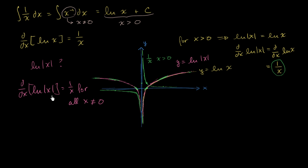So this is a much more satisfying antiderivative for 1 over x — it has the exact same domain. When we think about what the antiderivative is for 1 over x, I gave you a visual understanding of it: we would say it's the natural log of the absolute value of x plus c. Now we have an antiderivative that has the same domain as the function we're taking the antiderivative of.